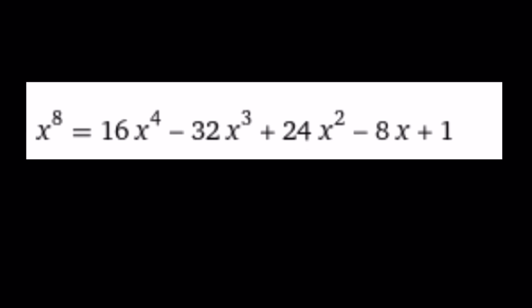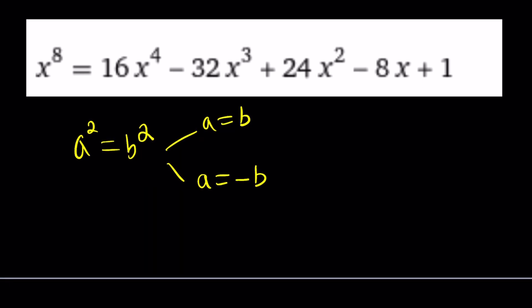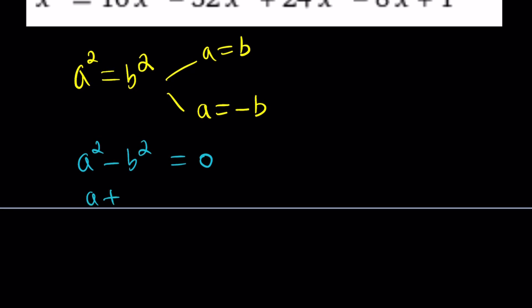If a squared equals b squared, then we have two results: a is equal to b, or a is equal to negative b. But why does this work? Well, if a squared equals b squared, we can write it as a squared minus b squared equals 0. Then a squared minus b squared is factorable because it's difference of two squares, and from here we get the results. This is something we're going to use.